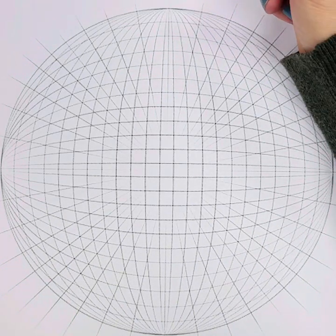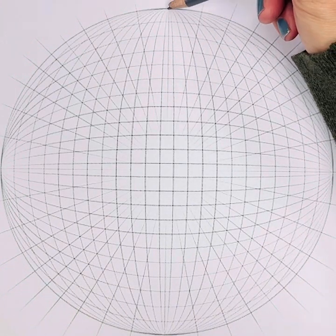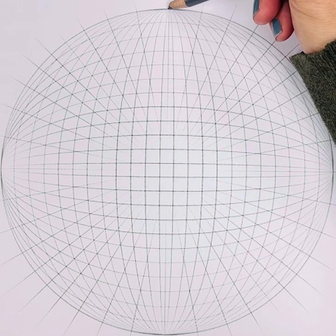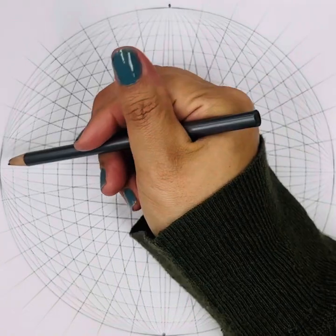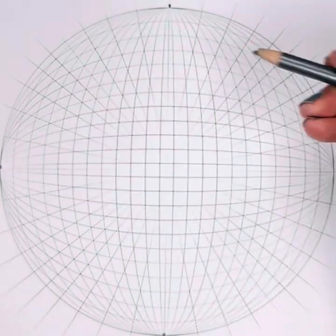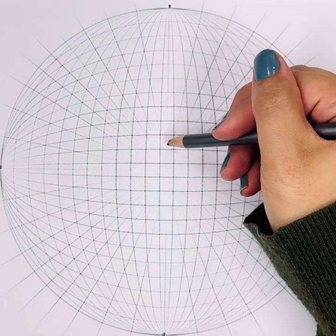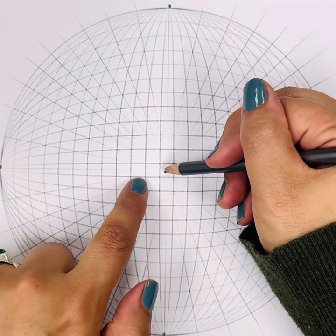First thing with a five-point perspective drawing, you have five points that are vanishing. So you have the first one up here where the lines converge, the second one down here where the lines converge, we have on the left and on the right, and then the last one is in the center right there.